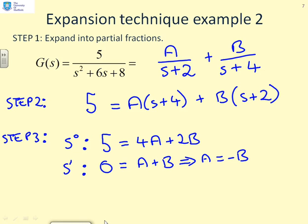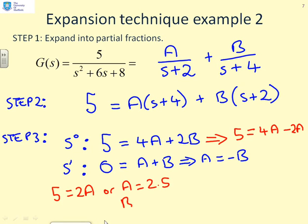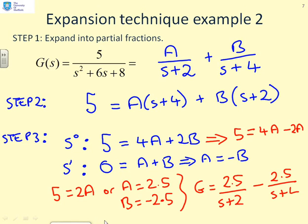If I use A equals minus B in the equation above, this implies 5 equals 4A minus 2A, which gives you 5 equals 2A, or A equals 2.5, B equals minus 2.5. And therefore, finally, I get G equals 2.5 over s plus 2 minus 2.5 over s plus 4.